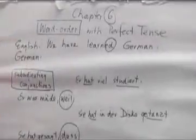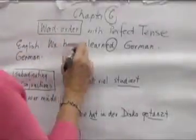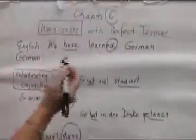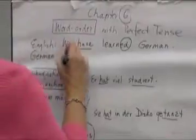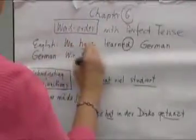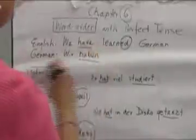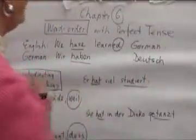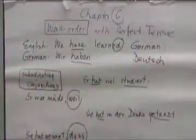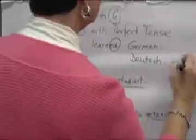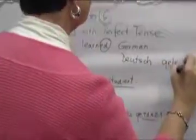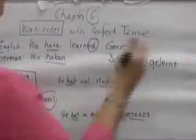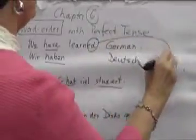I gave you an English example: 'We have learned German.' Now let's see how we say it in German. Wir haben — so far so good — Deutsch. And now what do you think is going to happen? The past participle is the last part of the sentence: Wir haben Deutsch gelernt. So the 'learned' goes all the way to the end.